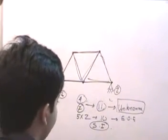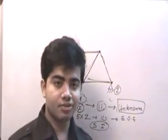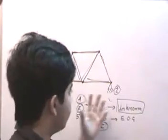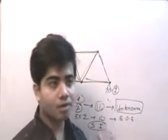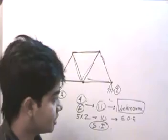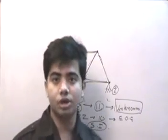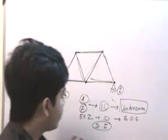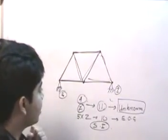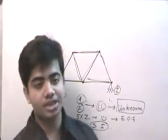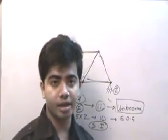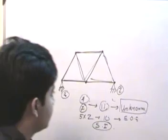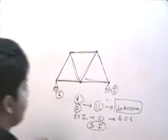We can convert this indeterminate structure back to a statically determinate structure by removing one of the redundant support reactions. Removing a redundant support reaction will not alter equilibrium, so the structure remains in equilibrium. This way, we can go from statically indeterminate to statically determinate by removing a redundant support reaction or an internal member force.